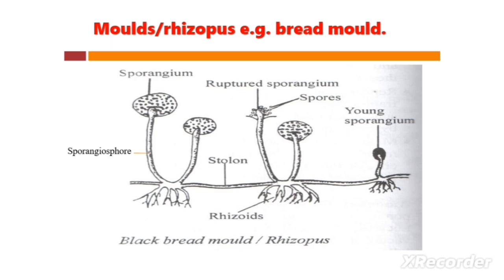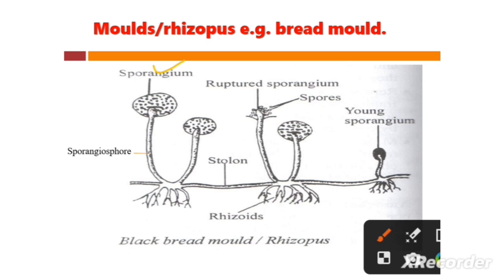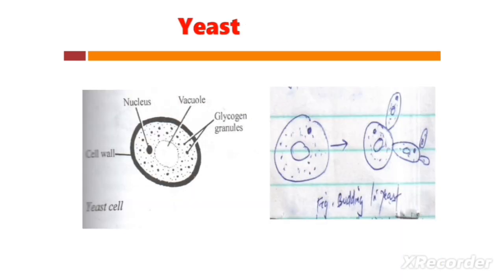This is mold — that's Rhizopus, for example the bread mold. We have the sporangium, the sporangiophore, the stolon, and the rhizoids here that support or provide anchorage. We also have the spores and the young sporangium.